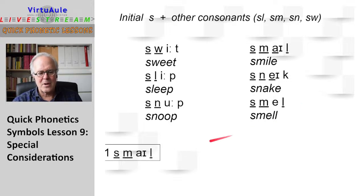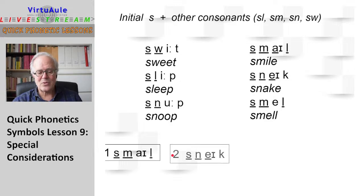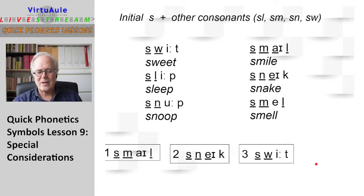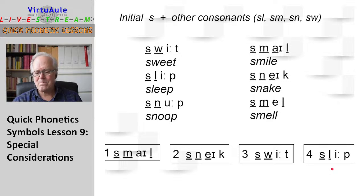Let's do this exercise together. Read the word and then I will correct. Read — smell. Next word — read — snake. Next word — read — sweet. And the last word — read — sleep.